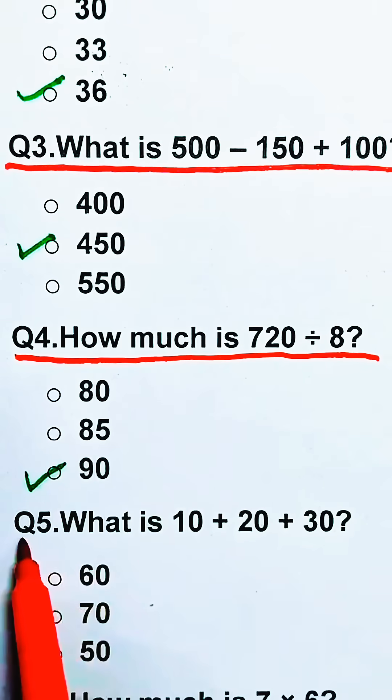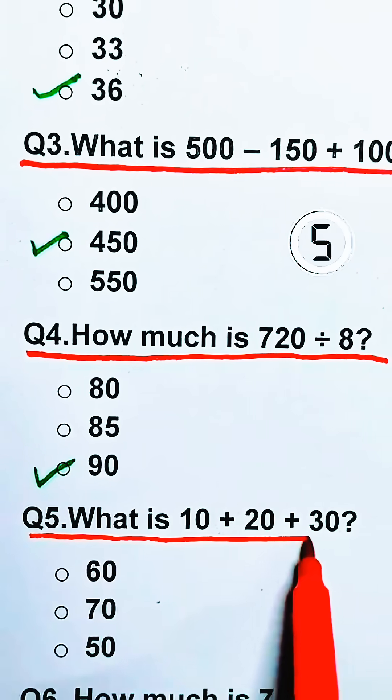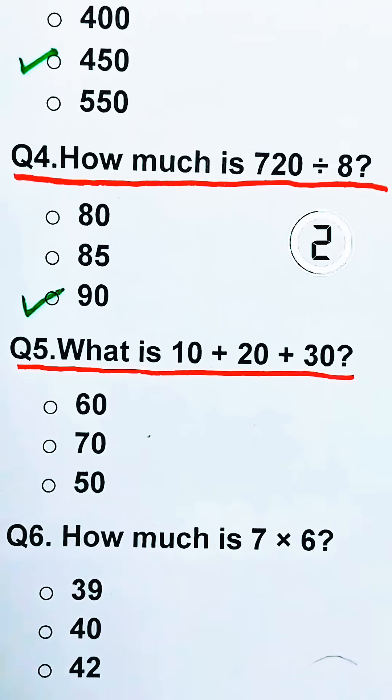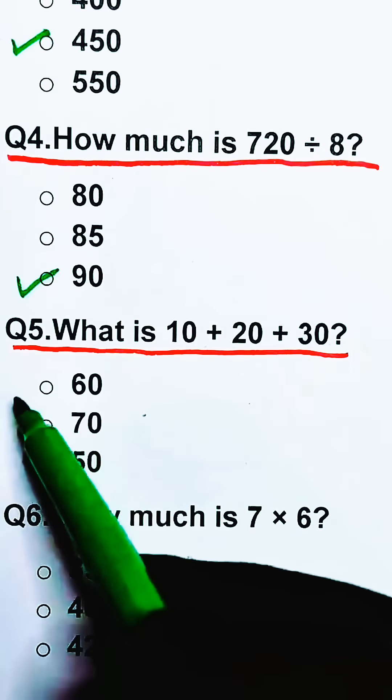Question 5. What is 10 plus 20 plus 30? The correct answer is 60.